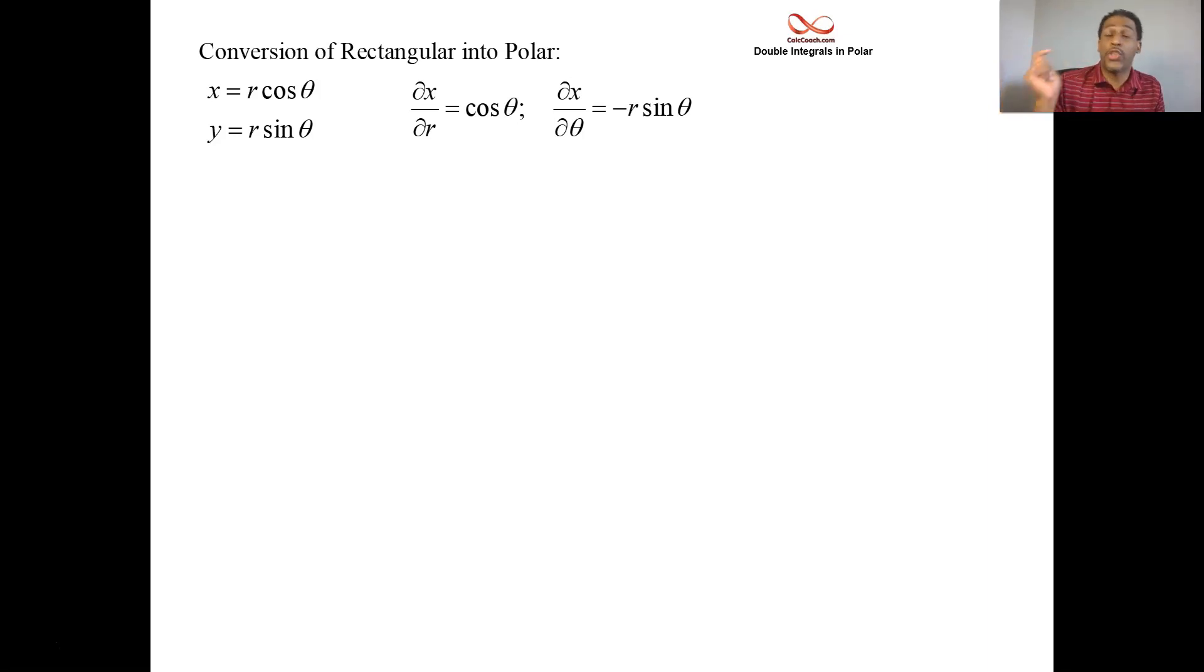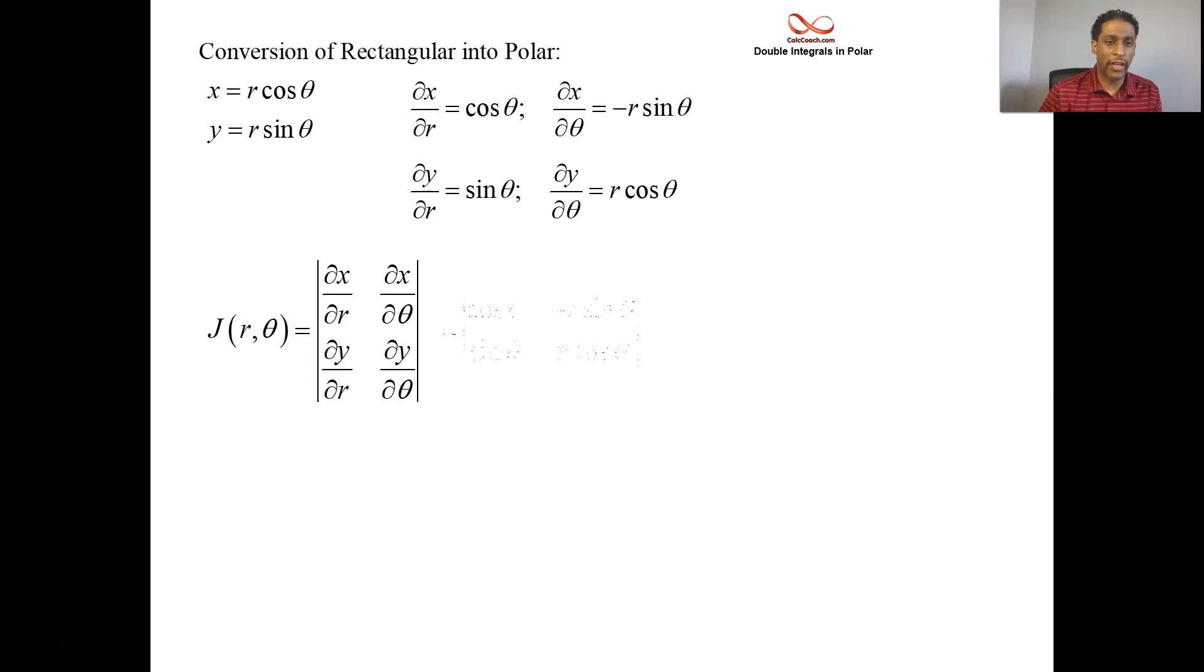Then we move to Y. Go to the next row. The partial derivative of Y with respect to R, just sine theta, and the partial derivative of Y with respect to theta, R cosine theta. We throw these guys in a matrix, and we'll be calculating the determinant of that matrix. And what we get is R cosine squared minus a negative R sine squared or plus, and then we could factor out the R and have cosine squared plus sine squared. And so the point is that the Jacobian is equal to R.